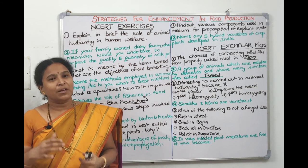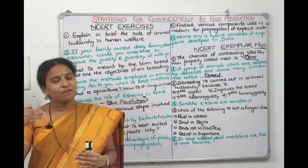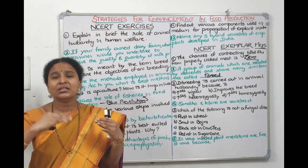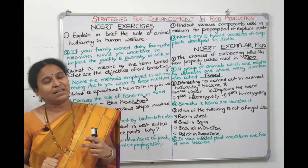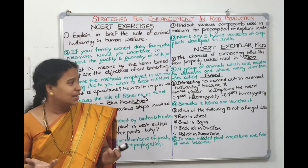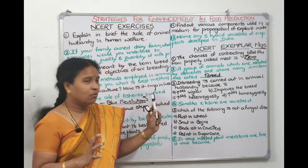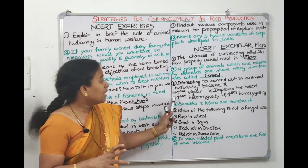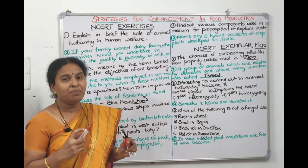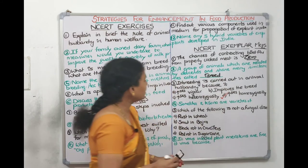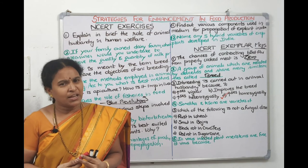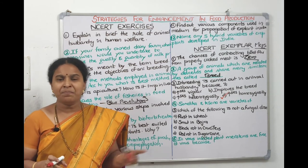Third exemplar question: why is inbreeding carried out in animal husbandry? When we do continuous inbreeding, the same genes are maintained — homozygosity is maintained. Inbreeding is done if you want a pure line or to maintain homozygosity. The answer is: to increase homozygosity. Sonalika and Kalyan Sona are semi-dwarf varieties of wheat, while Jaya and Ratna are semi-dwarf varieties of rice.